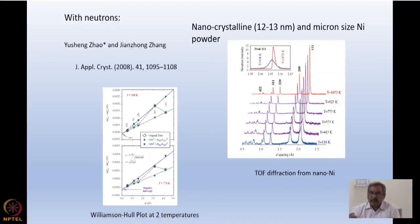And with respect to the data obtained from here is the Williamson-Hull plot. I add them linearly. This Williamson-Hull plot is actually square summation, but in principle they are the same. And you can see that the particle size and the microstrain both can be obtained from the Williamson-Hull plot using neutrons.